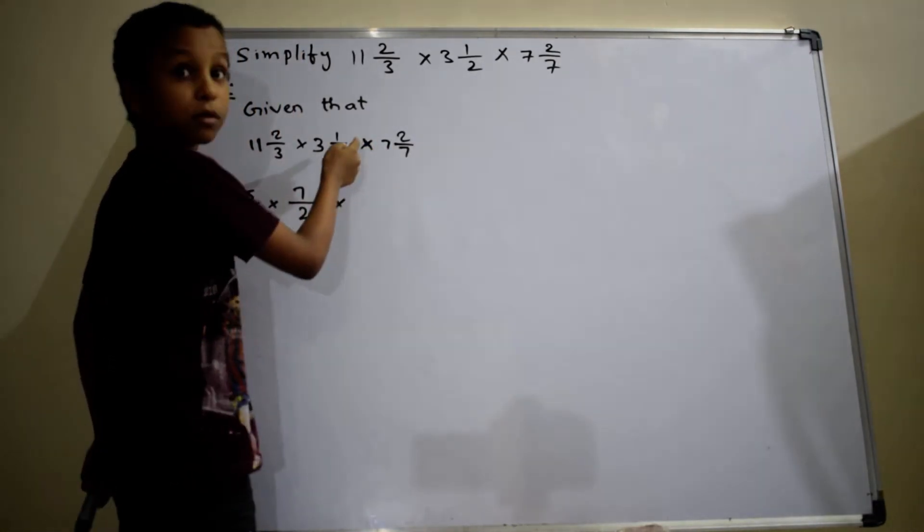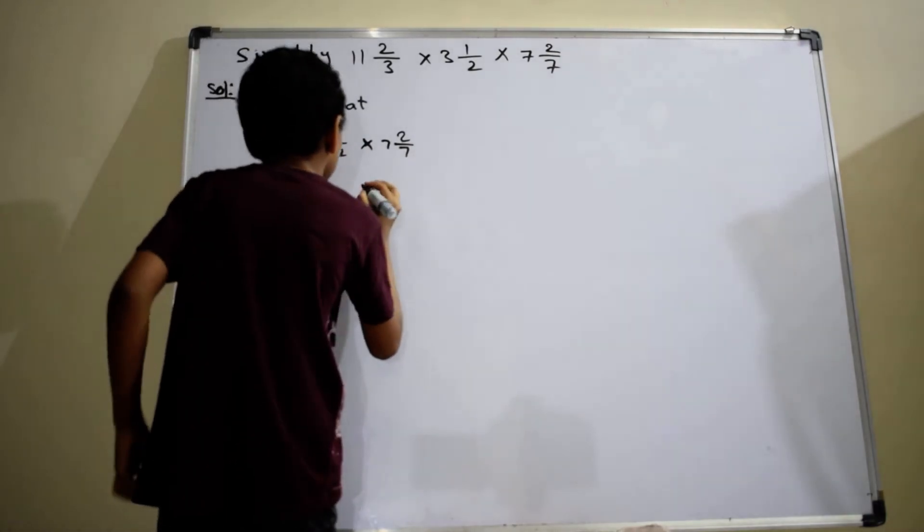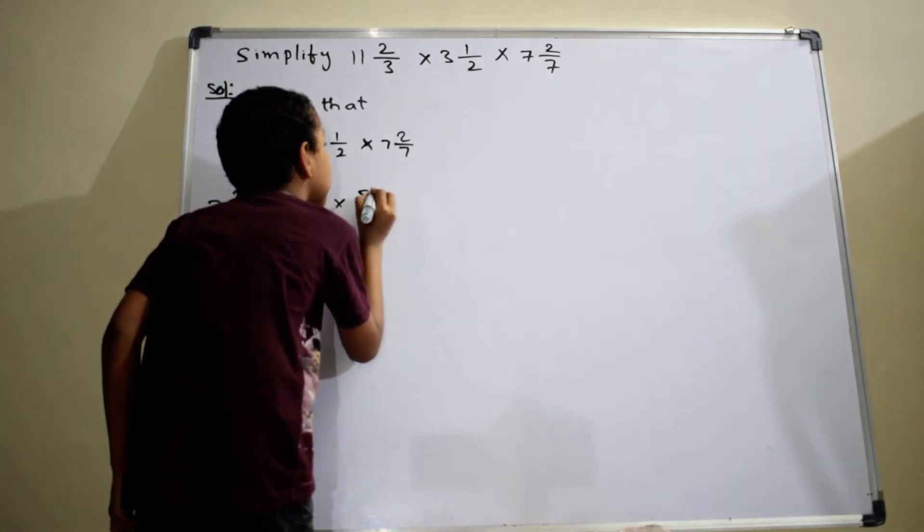7, 7 into 7, 49. 49 plus 2, which is equal to 51 by 7.